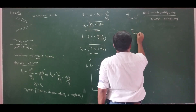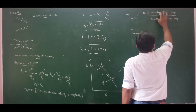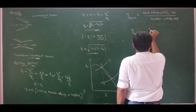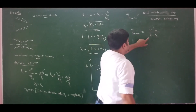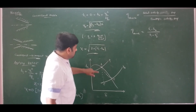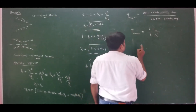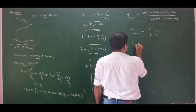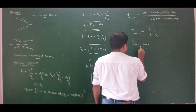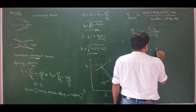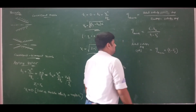If nozzle efficiency is known, the actual enthalpy drop is: delta H equals eta_nozzle times (H1 minus H2-dash), where H1 minus H2-dash is the isentropic enthalpy drop determined from the Mollier chart using the inlet and exit pressures assuming dry saturated conditions.